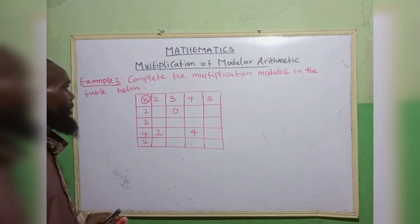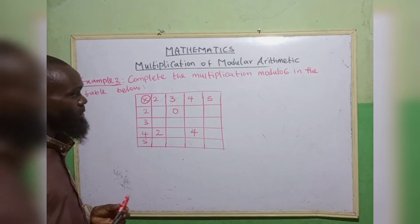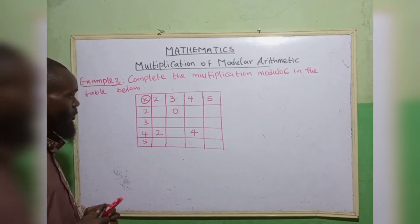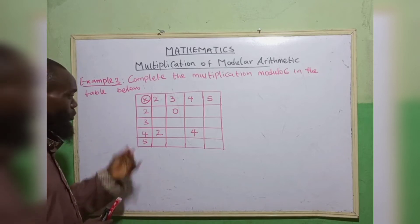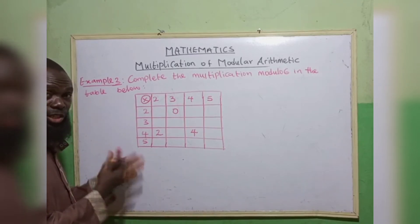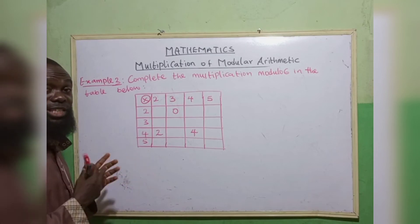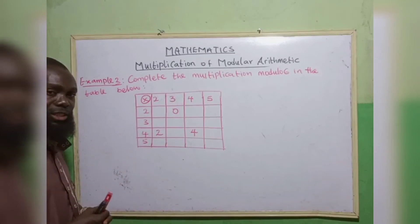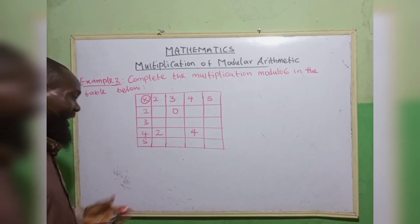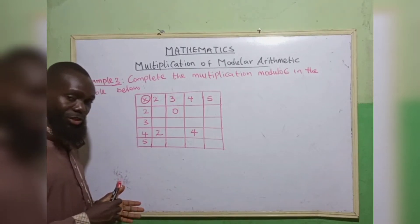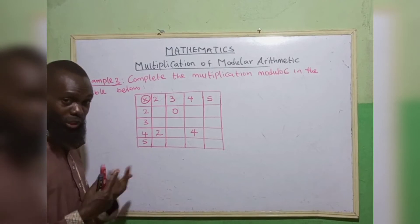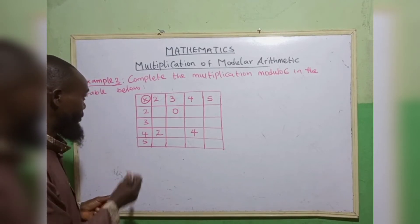Example 3: complete the multiplication table in modulo 6. We've looked at addition and subtraction tables; the same approach applies here. Remember, any multiplication result that is equal to or greater than the modulo must be divided by the modulo to find the remainder.